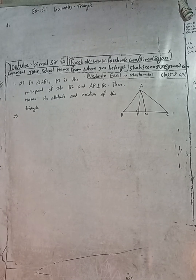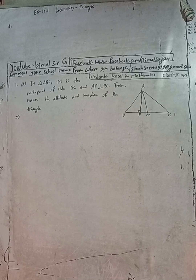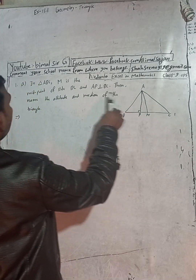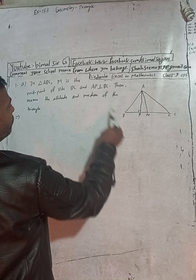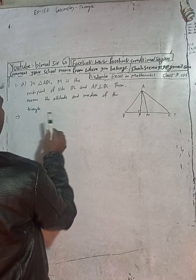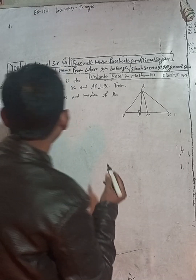Hi class 9 and 10 students, welcome back to Bhimalsarji YouTube channel. This is question number 1A, exercise 13.1, geometry triangle. Check the playlist for more solutions; exercise 13.1, numbers A, B, and C are already uploaded. Here the question is: in triangle ABC, M is the midpoint of side BC, and AP is perpendicular to BC. Name the altitude and median of the triangle.